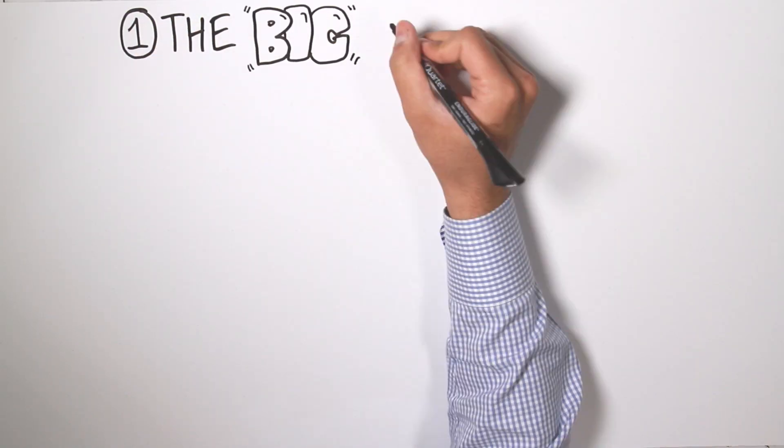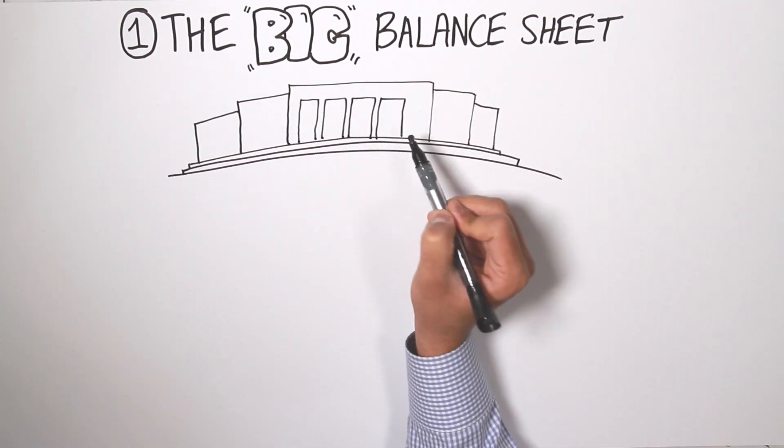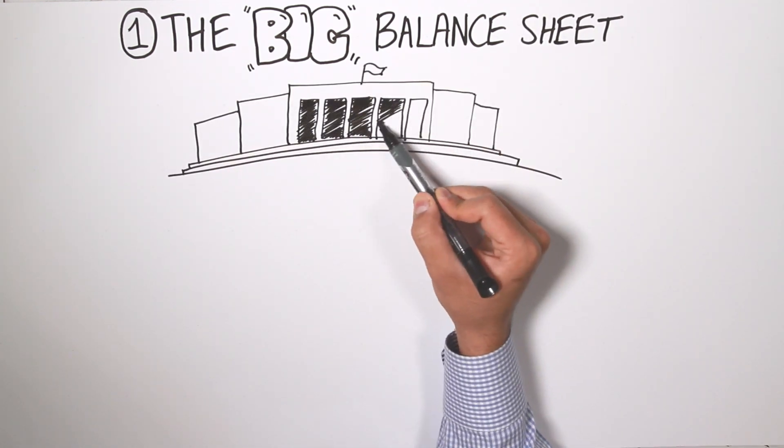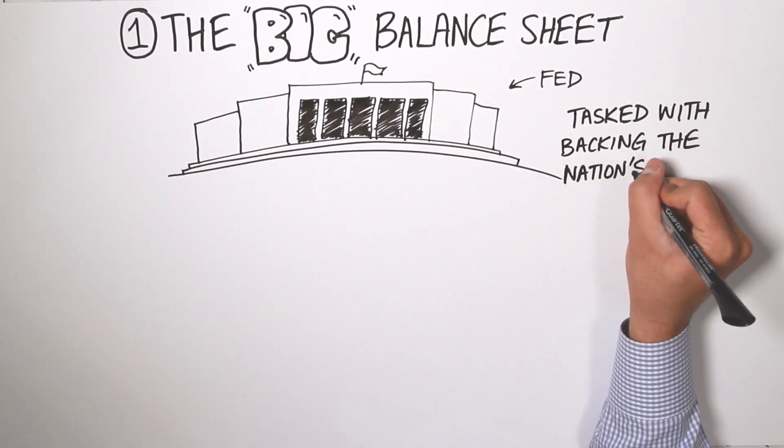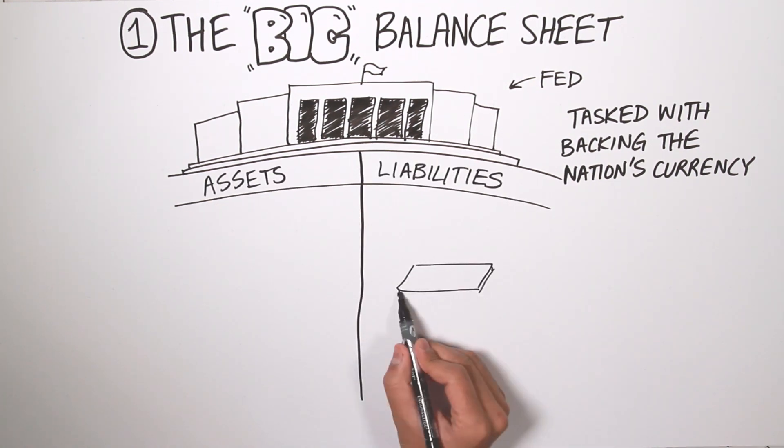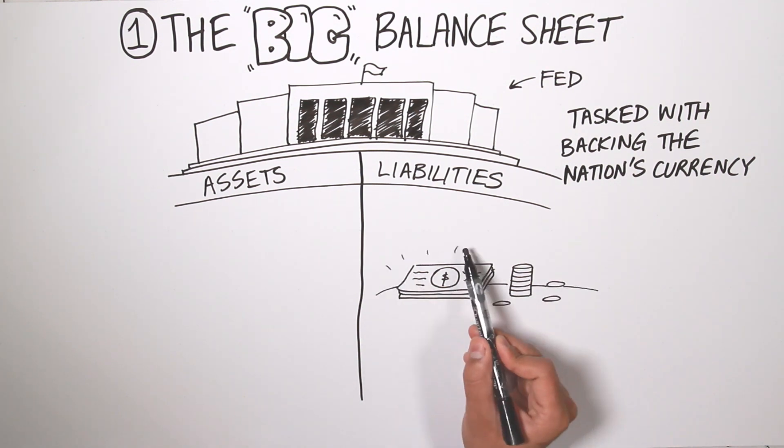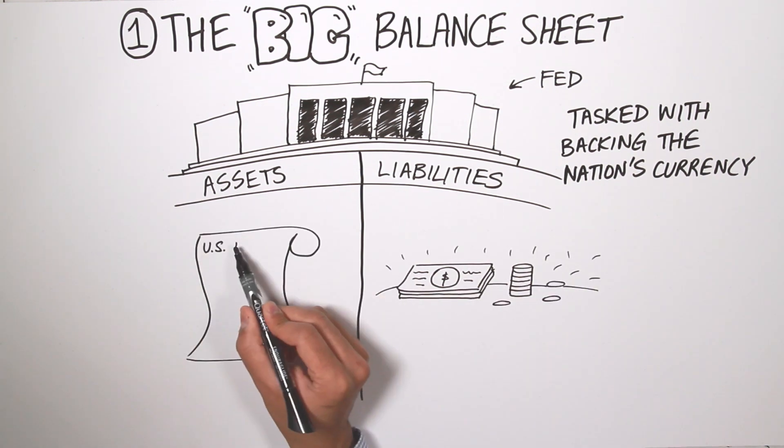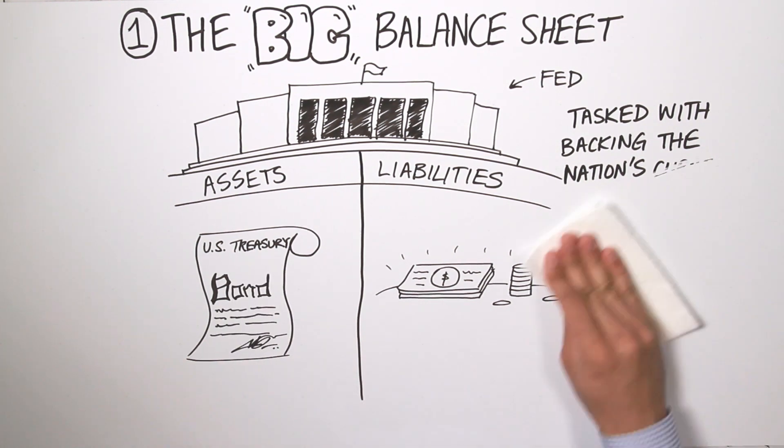First, the big balance sheet. Keep in mind, while the Fed talks a lot about monetary policy and overnight rates, what they really do on a day-to-day basis is back the nation's currency. So, all of the cash and coin in your pocket, that goes on the liability side of the Fed's balance sheet, and it's backed by assets on the asset side, including U.S. Treasury bonds. So, that's what makes up the balance sheet.